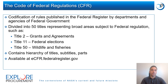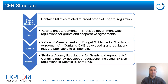Each title is divided into subtitles, which are further divided into parts that cover specific regulatory areas. The CFR is publicly available at ecfr.federalregister.gov. Title 2 is subdivided into two subtitles, A and B, which pertain to regulations developed by the Office of Management and Budget and those developed by grant-funding federal agencies, respectively.